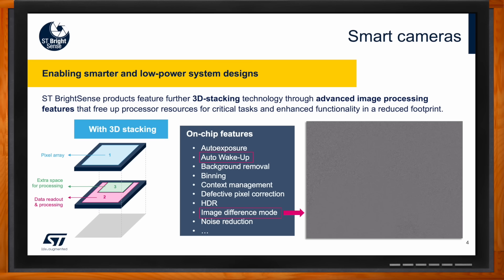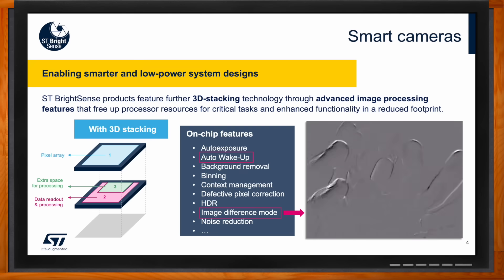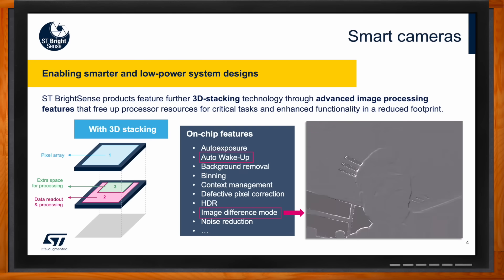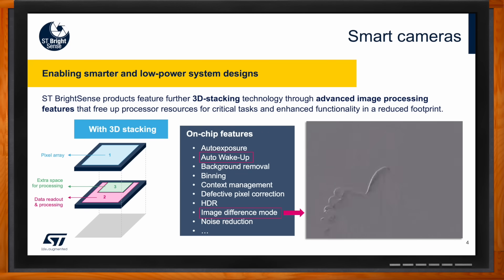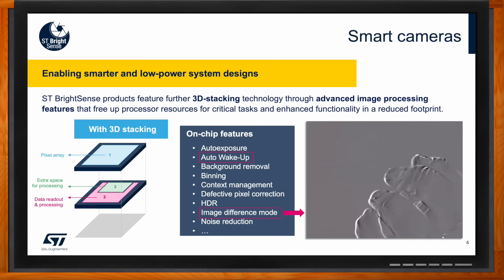Today we'll talk about two of those on-chip features. The first is auto wake-up, which is very useful for ultra-low-power applications. The second is the image difference mode. As you can see in the video on the right, the principle is to take two consecutive images, compute the difference, and only output what changed in the scene. You will see only the borders of the changing elements. This outputs far less data compared to a complete image. Importantly, this processing is done on the sensor itself, saving significant power and processing cost.